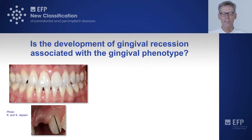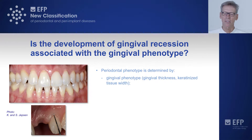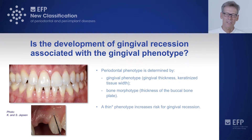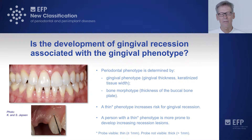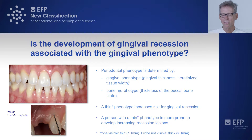The second question: is the development of gingival recession associated with the gingival phenotype? The periodontal phenotype is determined by the gingival phenotype — referring to the thickness of the gingiva and the width of the keratinized tissue — and the bone morphotype, meaning the thickness of the buccal bone plate. A thin phenotype increases the risk for gingival recession. If a periodontal probe is visible through the gingiva, this means the gingival is most likely thin, up to one millimeter of thickness.